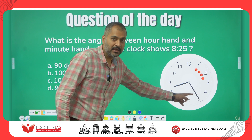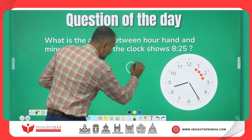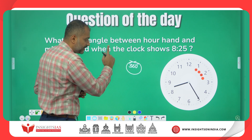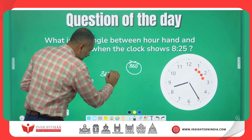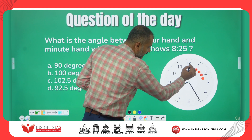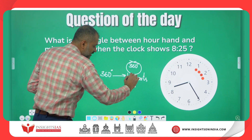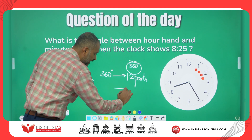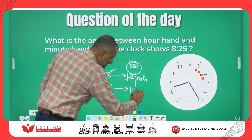The time is 8:25. The clock makes one complete revolution of 360 degrees, and this 360 degrees is divided into 12 parts — from 1 through 12. So 12 parts equal 360 degrees, meaning each part is 30 degrees. One part is 30 degrees.